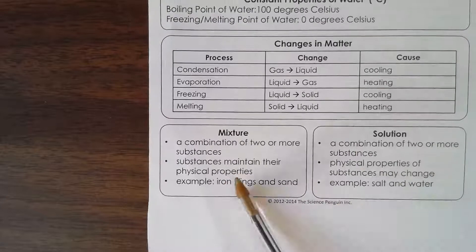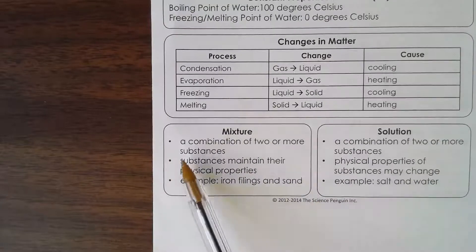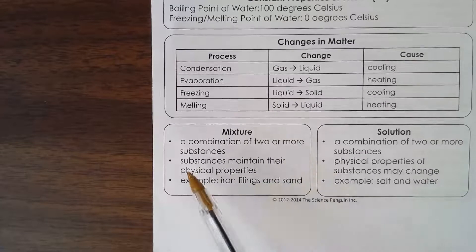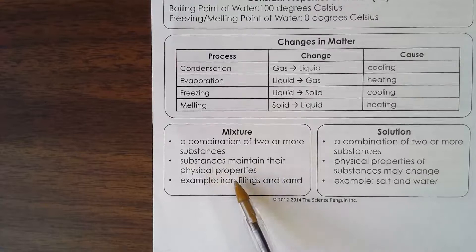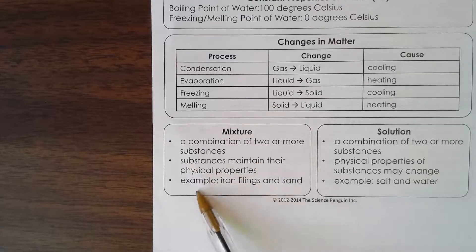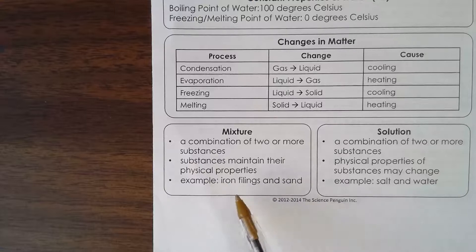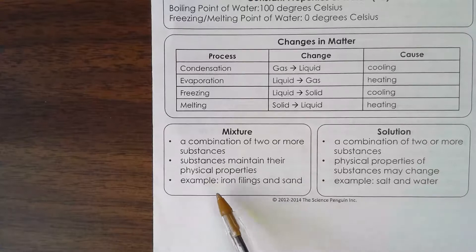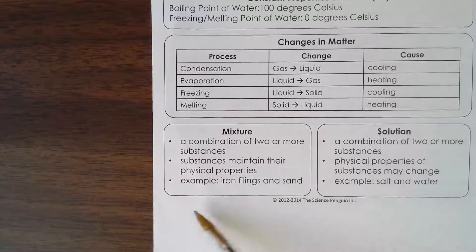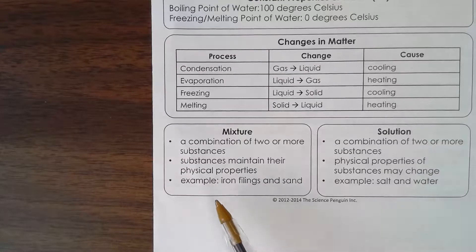Now let's talk about mixtures and solutions. A mixture is a combination of two or more substances where substances maintain their physical properties. An example is iron fillings and sand. You can also say Skittles — there's a jar of Hershey Kisses on my desk in different colored wrappers, so that would be a mixture. You can separate them by color.